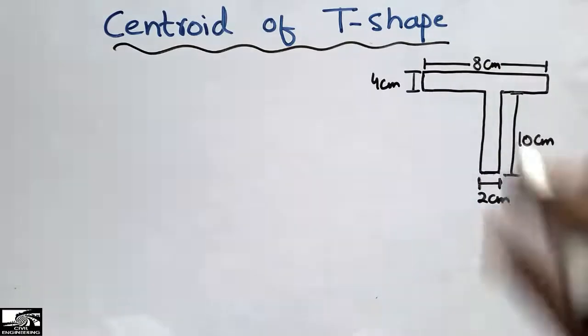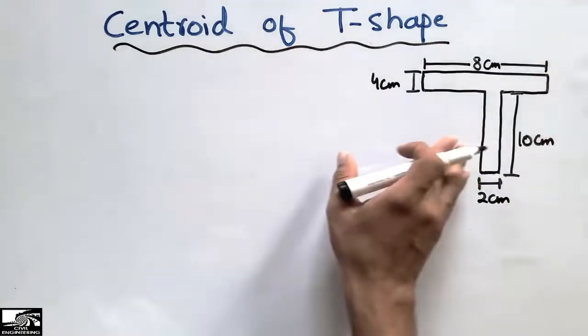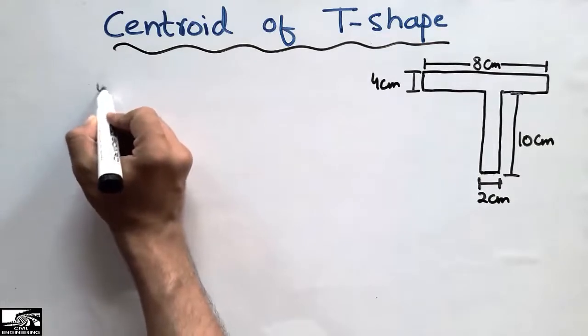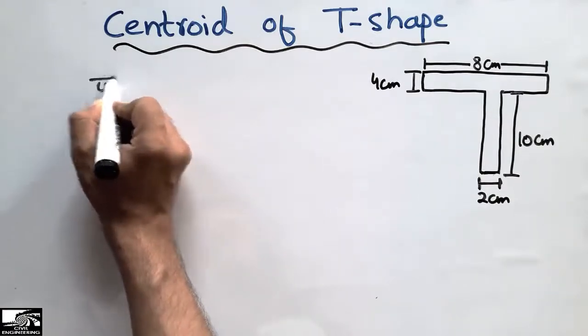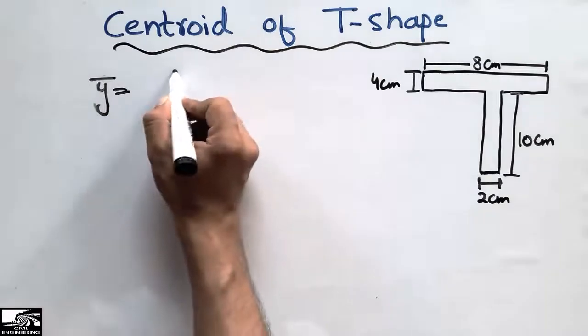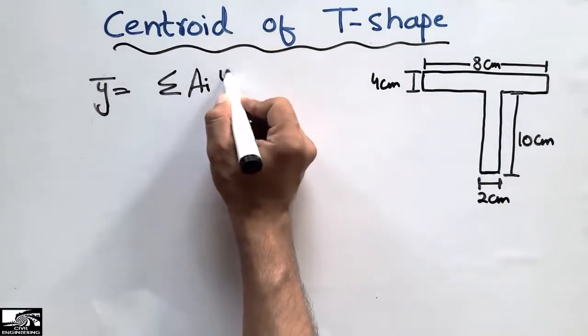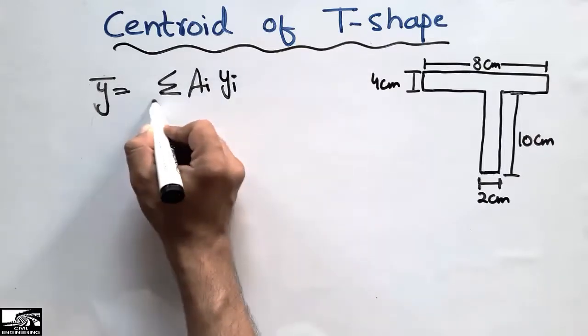To find the centroid of this T-shape or any shape, first you need to remember this formula: the centroid is equal to the summation of individual areas times their individual centroids, divided by the summation of the areas.